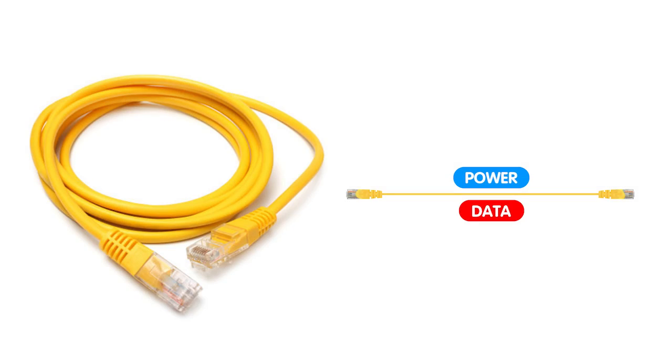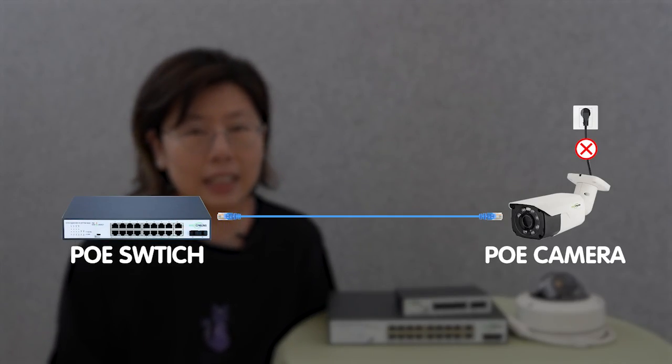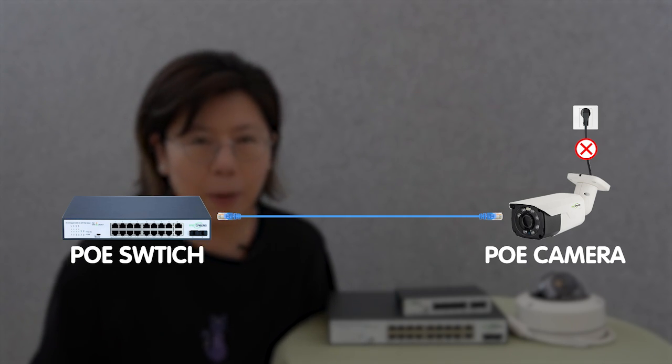So PoE stands for Power Over Ethernet. It allows the network cable to carry both data and electrical power. This means devices such as wireless access points or IP cameras — as long as they are PoE-compatible — can be powered through the same Ethernet cable that connects them to the main network. It eliminates the need for a separate power cable and also simplifies the installation.